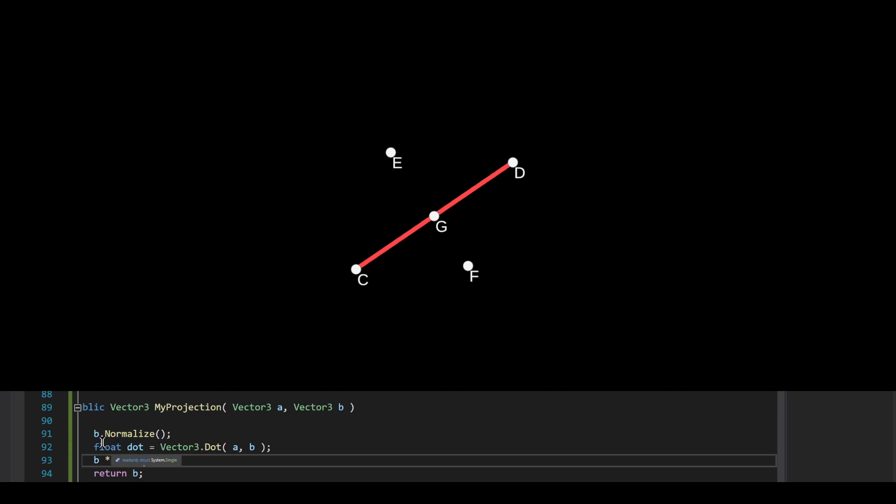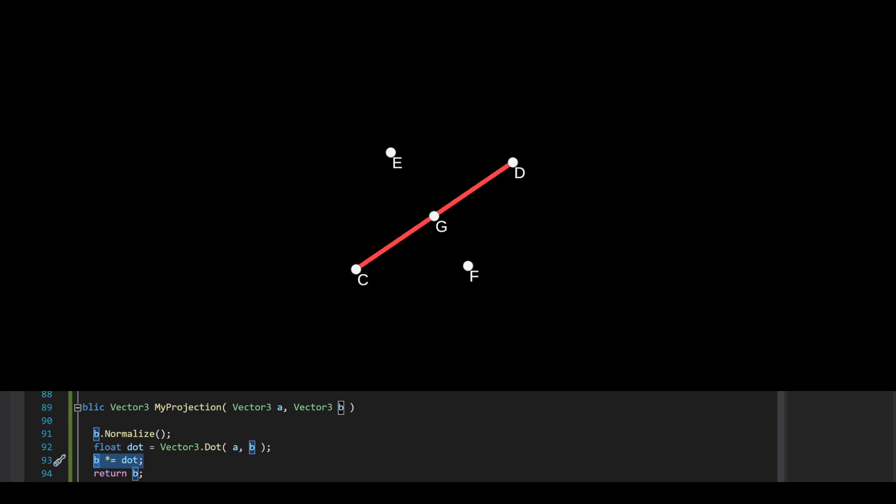Literally, all you have to do is you normalize B, you take the dot product of A and B, and then you just scale B, which is currently a scale of 1 because you normalized it. You just need to scale B by that factor. And so that's kind of the basic dot product. That's how it works.